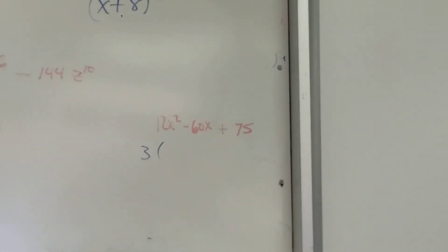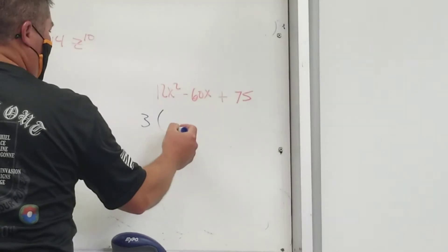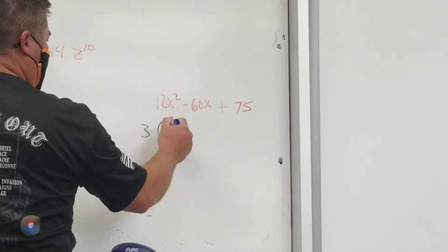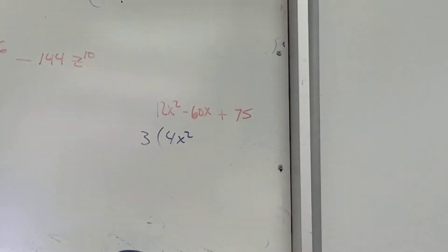3 into 12. I'm just factoring it out, which means I'm dividing it out. Simeon, what's his first term going to be? 4. 4 what? 4x squared, right?